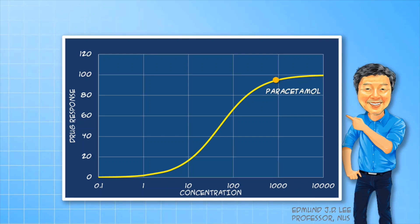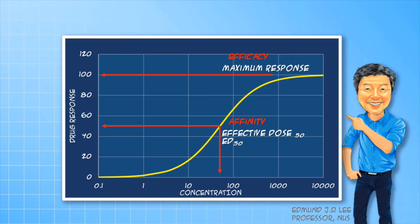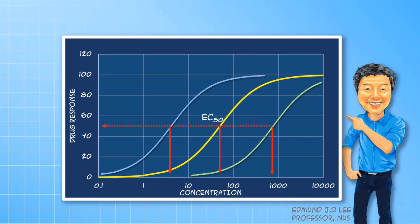The affinity of the drug molecule for the receptor can be measured by determining the EC50, or the effective concentration producing half the maximum response. The maximum response is termed the efficacy of the drug. Comparing the EC50 of various drugs allows us to determine the relative potencies of these drugs. If the EC50 of the curve is shifted to the left, the potency is higher.